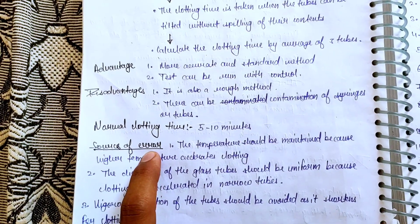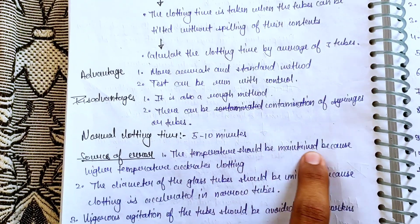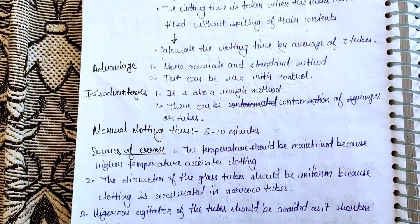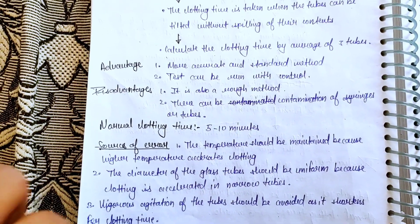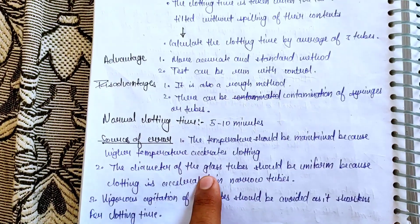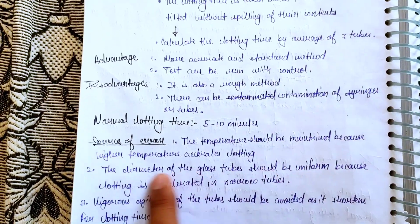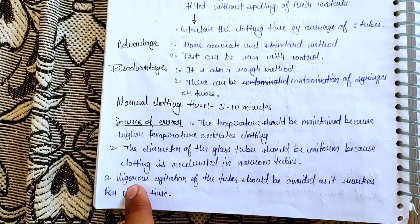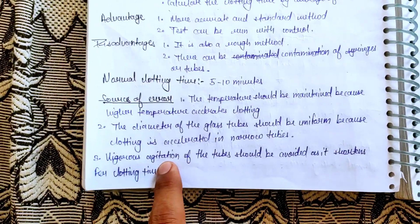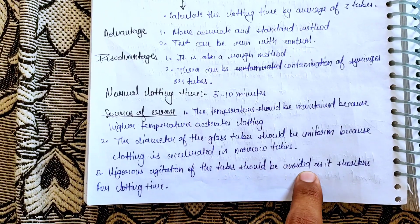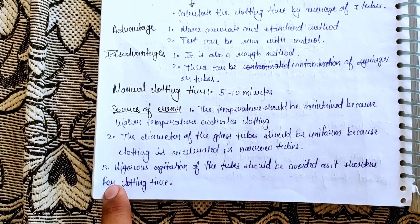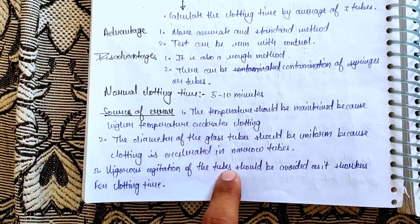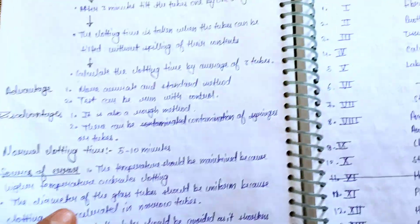Sources of error include: temperature must be maintained, because high temperature accelerates clotting. The diameter of glass tubes should be uniform, because clotting is accelerated in narrow tubes. Vigorous agitation of the tubes should be avoided, as it shortens the clotting time.